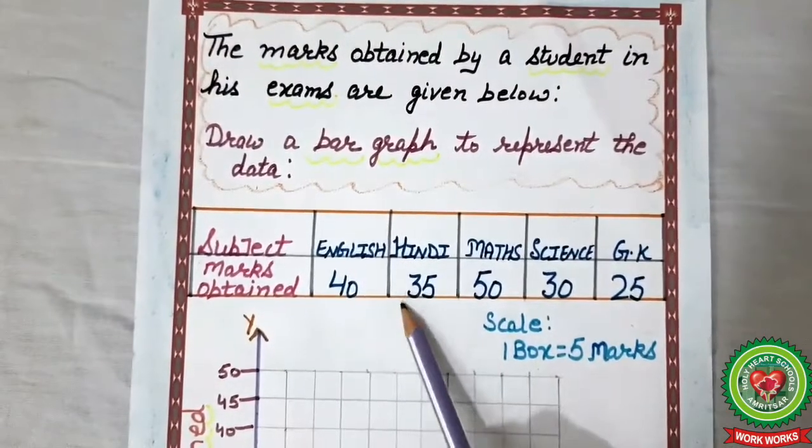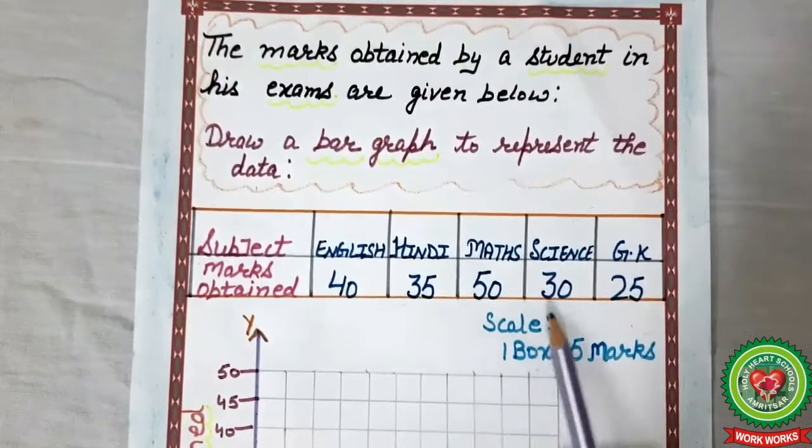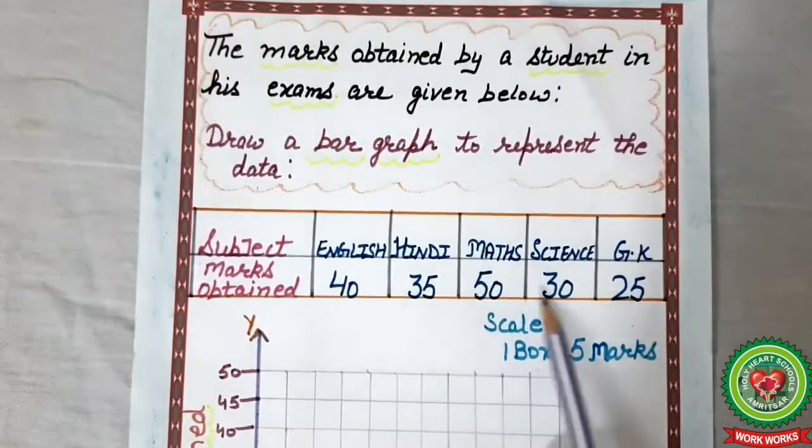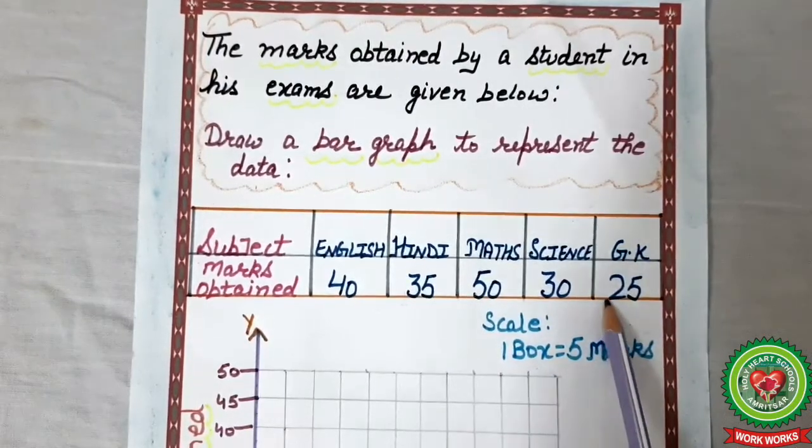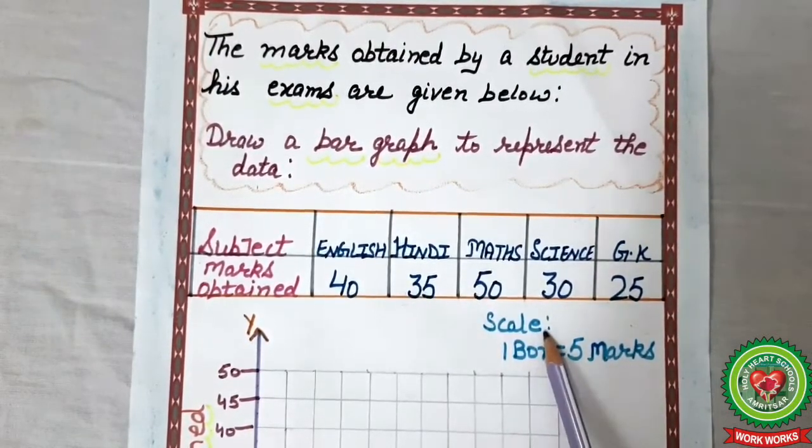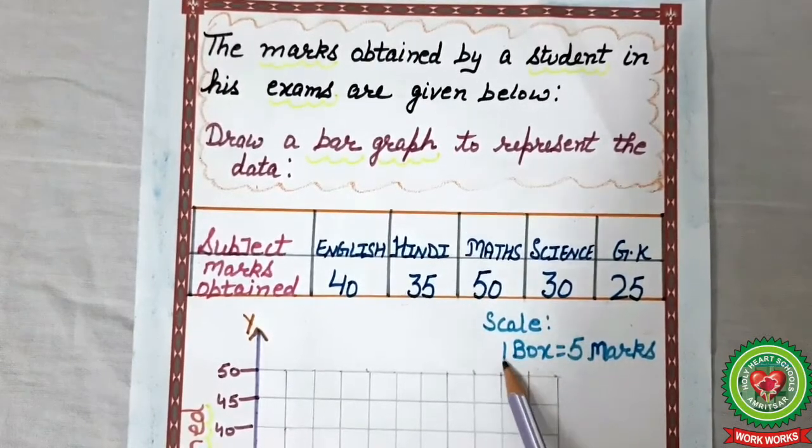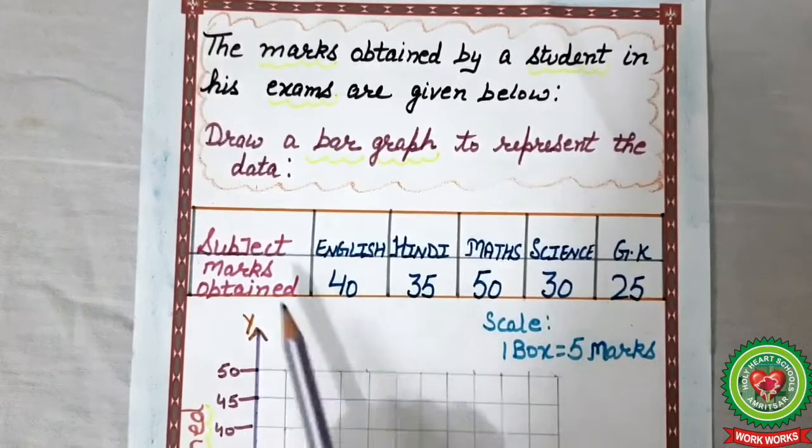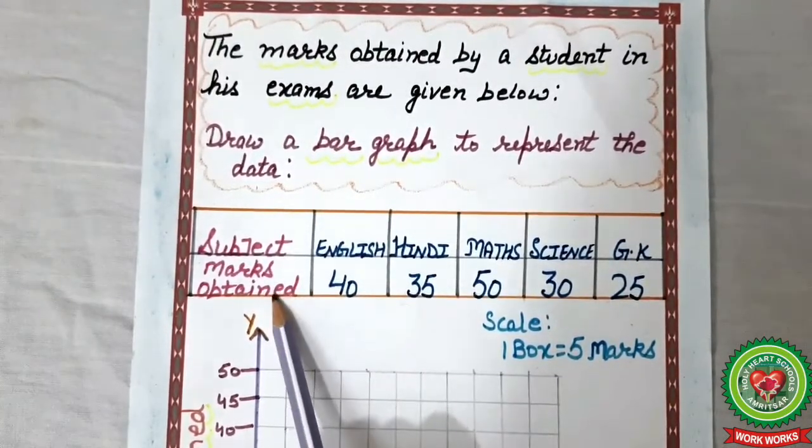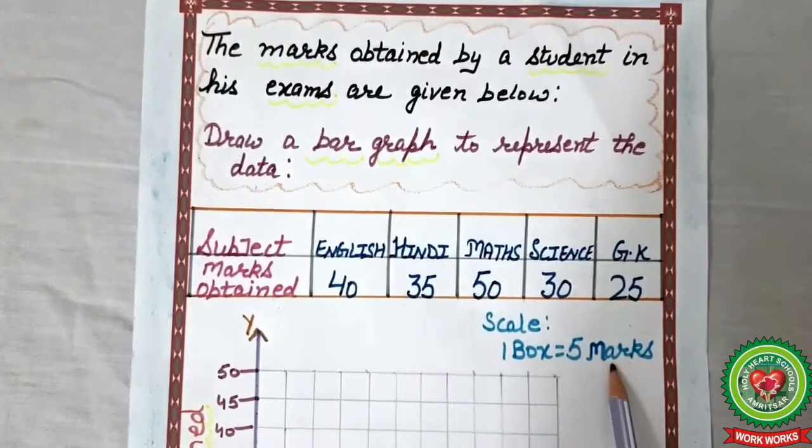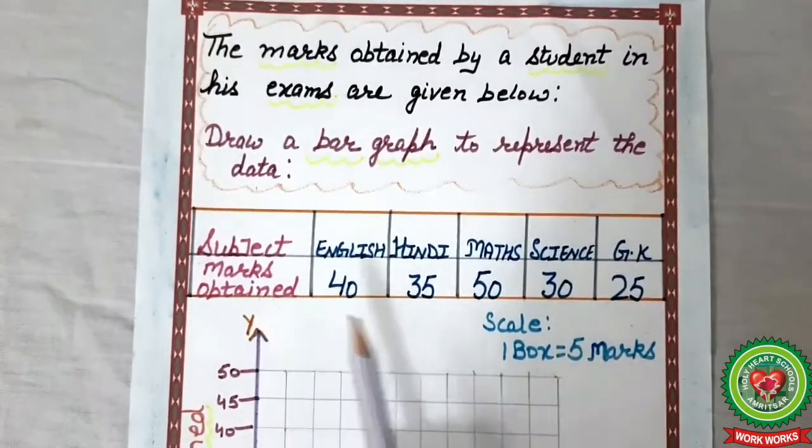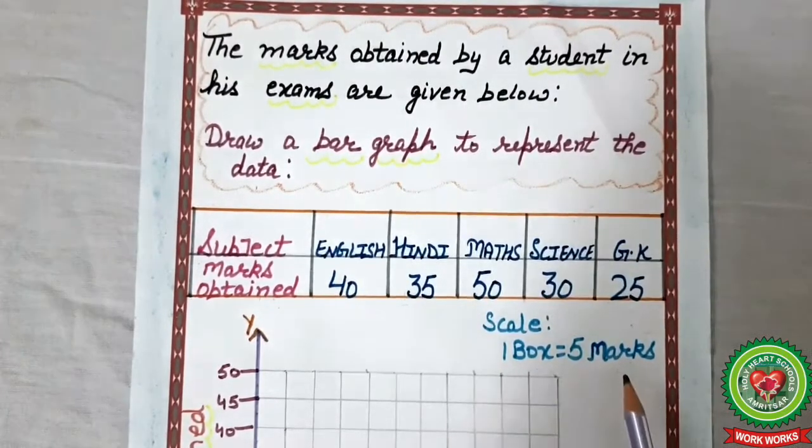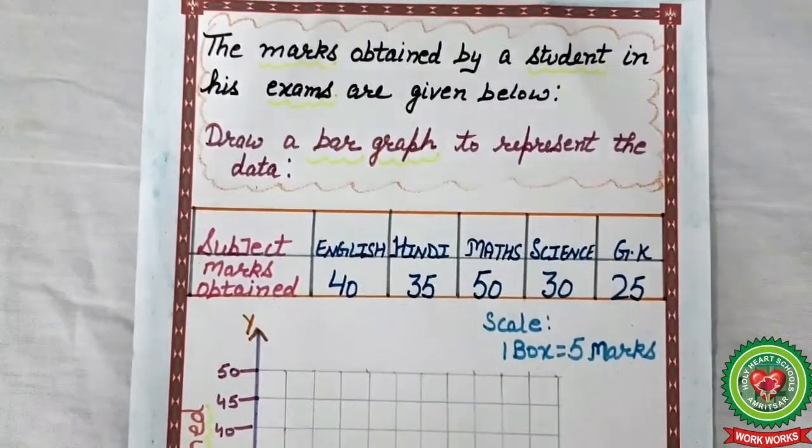Students, what do you observe? What is the common table in which all these numbers come? What is the common scale? It is 5. So first of all, we will write scale is equal to 1 box is equal to 5 marks. Whatever is given in the second column, we will write here. Marks is given, so we will write 1 box is equal to 5 marks.